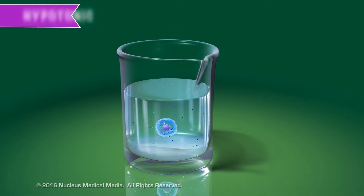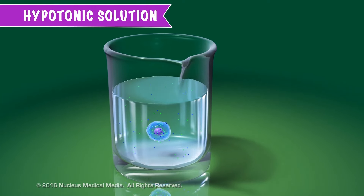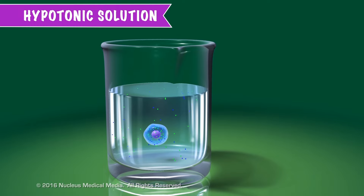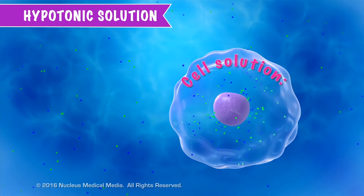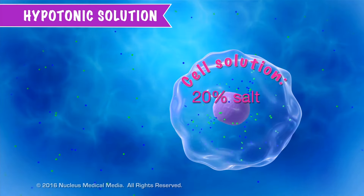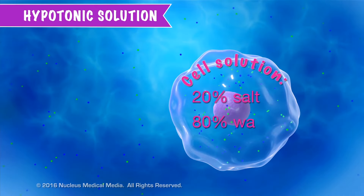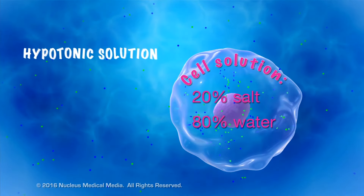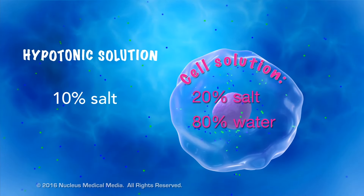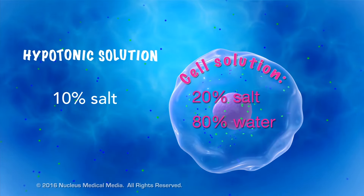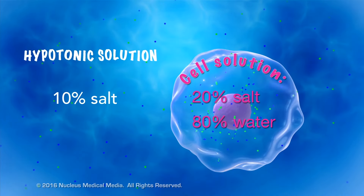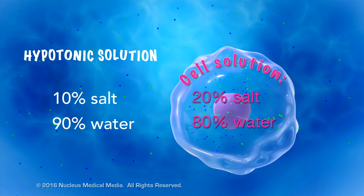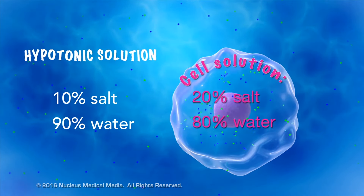A third possibility is a solution outside the cell with a higher concentration of water than the solution inside the cell. In this example, the solution inside the cell has 20% salt, so the remainder is 80% water. But the cell has been placed in a beaker that only has a 10% salt solution. Doing the math, we can see that the solution surrounding the cell is 90% water, which means there's a greater concentration of water outside the cell than inside.